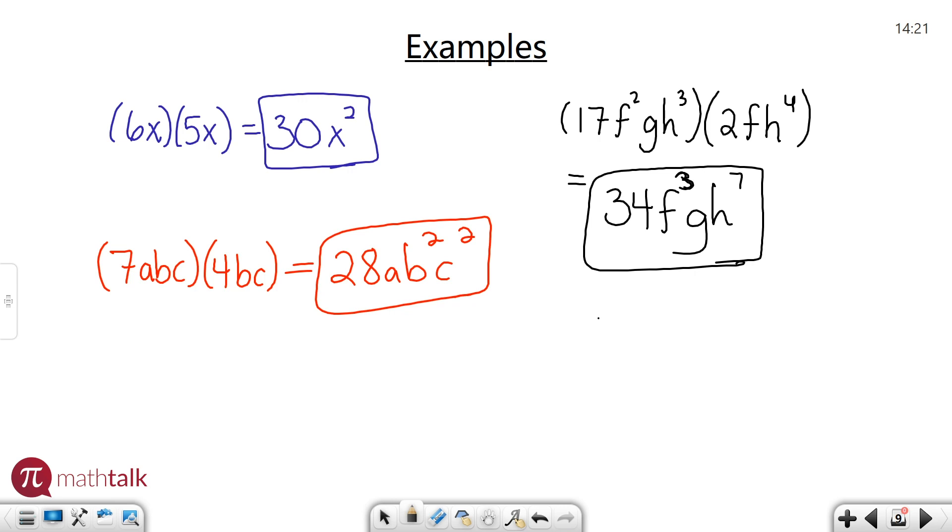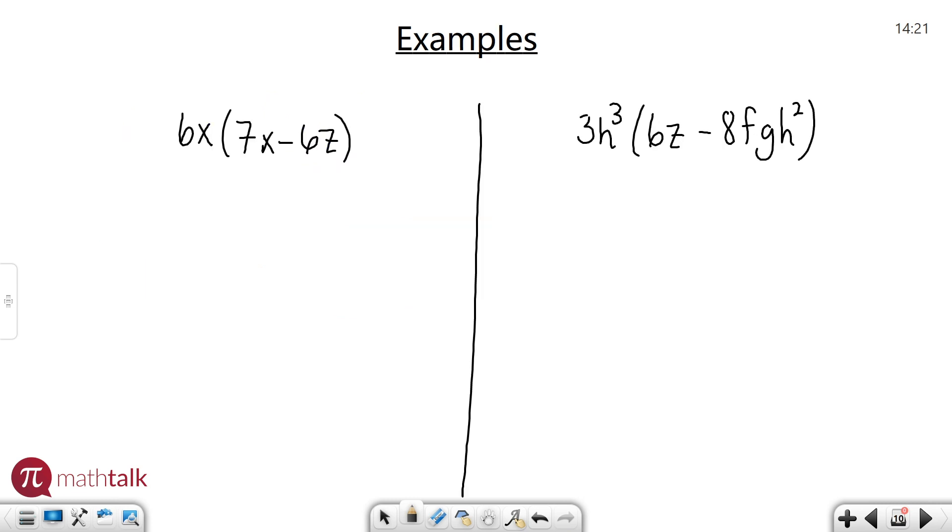That's one type of multiplying polynomials. Let's look at another type. This involves the distributive property. The distributive property tells you that when you have a term multiplied by something in parentheses, you take the term on the outside and multiply it by each term on the inside.